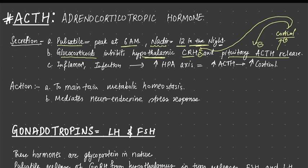Other factors like inflammation, infection, or any physical stress will stimulate the HPA axis — that is the hypothalamic pituitary axis — which will increase ACTH and subsequently increase cortisol.